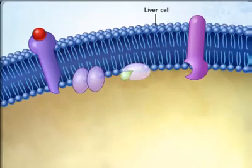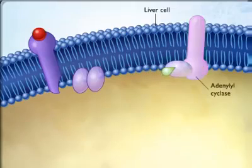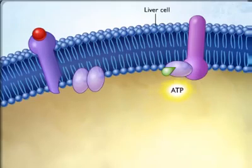The activated G protein subunit then diffuses within the plasma membrane until it encounters adenylyl cyclase, a membrane enzyme that is inactive until it interacts with the G protein subunit.